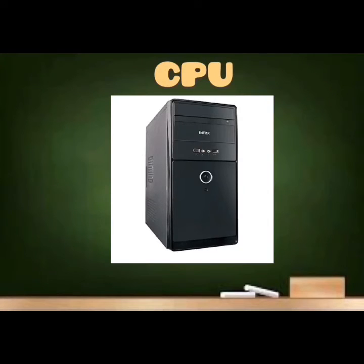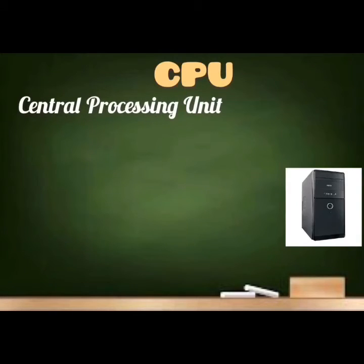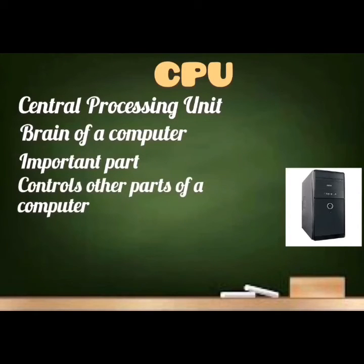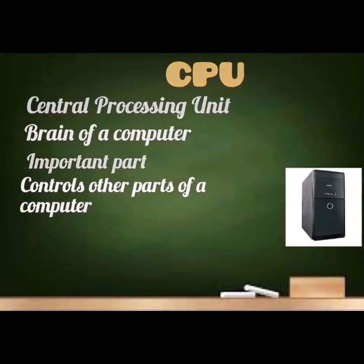The next main part of computer is CPU. Did you see the picture of CPU here? CPU stands for Central Processing Unit — that is the full form of CPU. It is called the brain of the computer, and it is a very important part. Since it is the brain of the computer, it will control all the other parts. Just like in our body, our brain controls our eyes, neck, nose, mouth, and ears — likewise, CPU will control all the other parts of the computer. That is why it is called the brain of a computer.